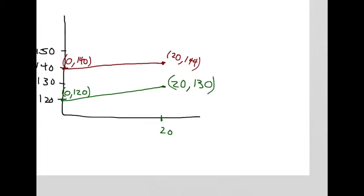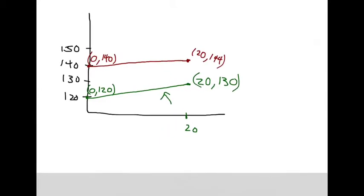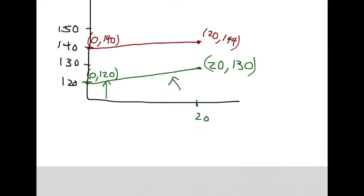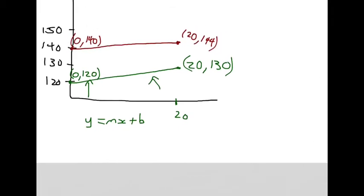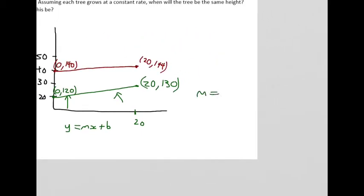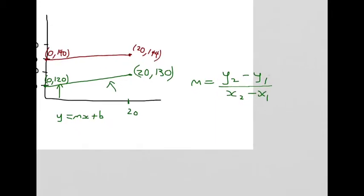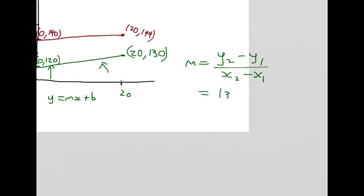We could find the slope of this green line and we know the y-intercept so we could put that into slope intercept form. Let's find the slope using slope formula - the difference in the y values over the difference in the x values. That would be 130 minus 120 over 20 minus 0, which gives us 10 over 20, which is just half. That means the tree would grow half a centimeter per day.